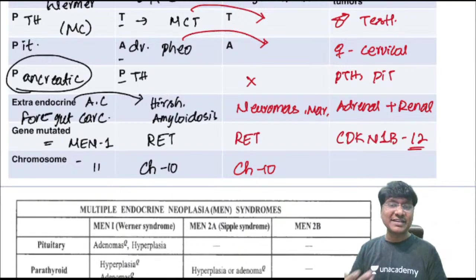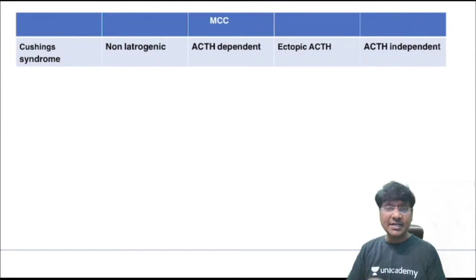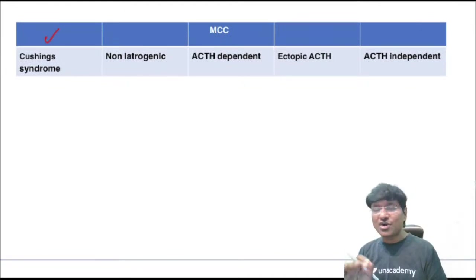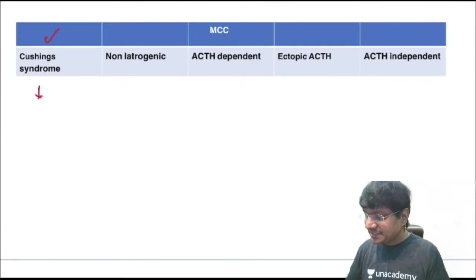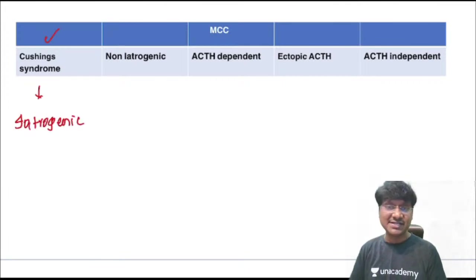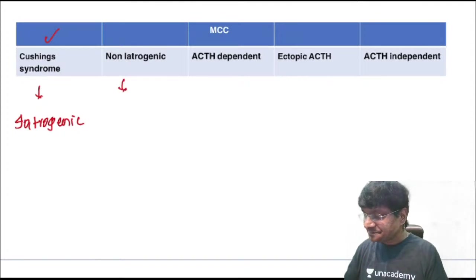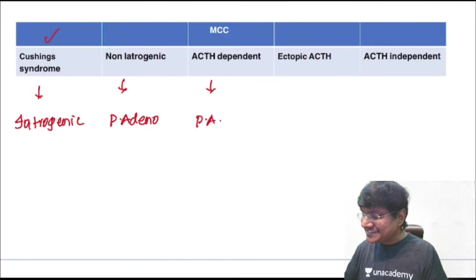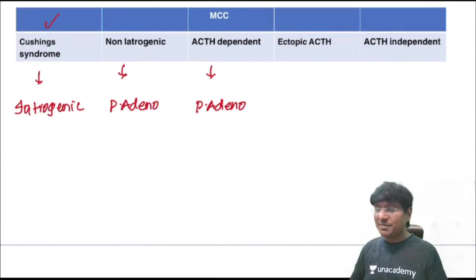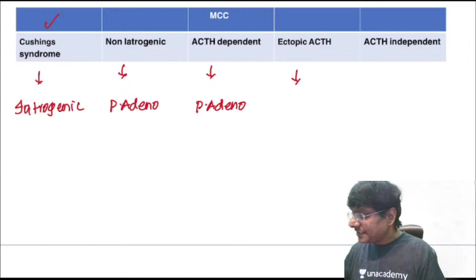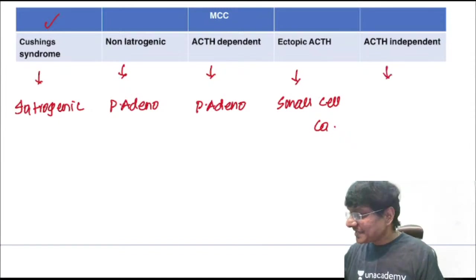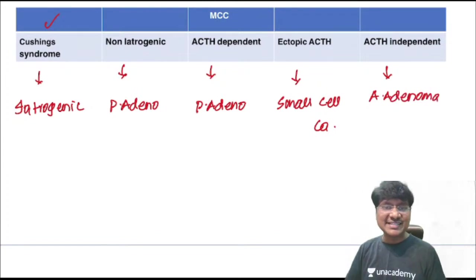Now adrenal gland disorders — starting with Cushing's syndrome. Most common cause overall is iatrogenic steroid supplementation. Most common cause of non-iatrogenic Cushing's is pituitary adenoma. Most common cause of ACTH-dependent Cushing's is pituitary adenoma. Most common cause of ectopic ACTH-producing Cushing's is small cell carcinoma of the lung. Most common cause of ACTH-independent Cushing's is adrenal adenoma.